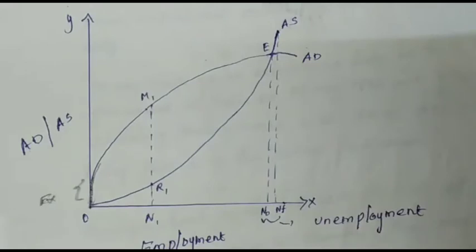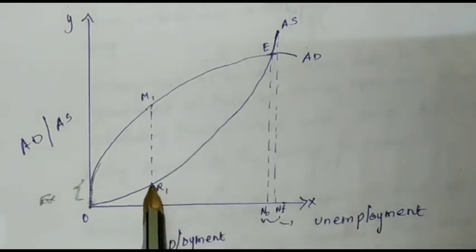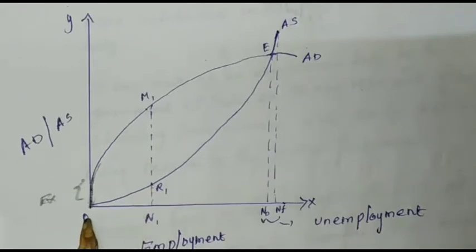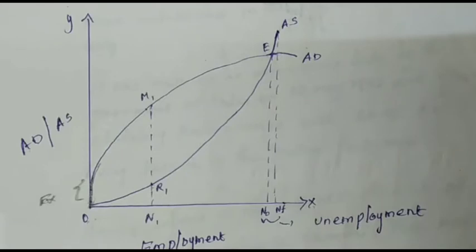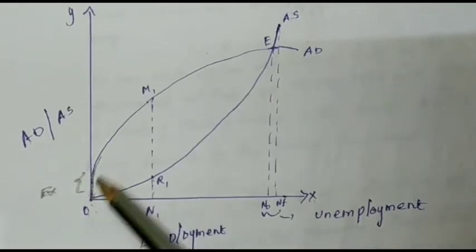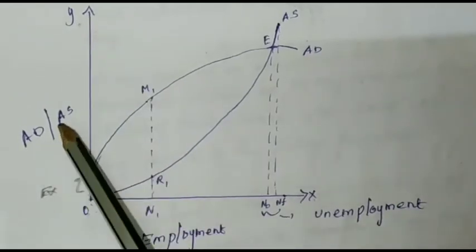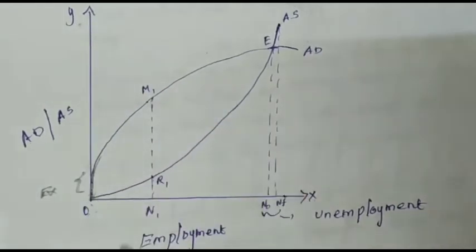Now let us look at the diagram. For example, on the X-axis we have employment opportunities, and on the Y-axis we have the aggregate demand. This diagram shows the relationship between employment and aggregate demand and supply.